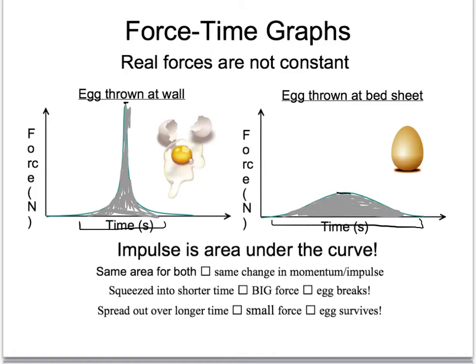The egg has to go from whatever its initial velocity — greater than zero — to its final velocity of zero. We know it stops. So it requires the same stopping power, as long as you threw the egg at the same speed both times. When it hits the wall, the egg gets a big force over a short time — big force multiplied by short time. When the egg hits the bedsheet, it gets a small force multiplied by a big time. Both graphs have the same area, which means there's the same change in momentum.